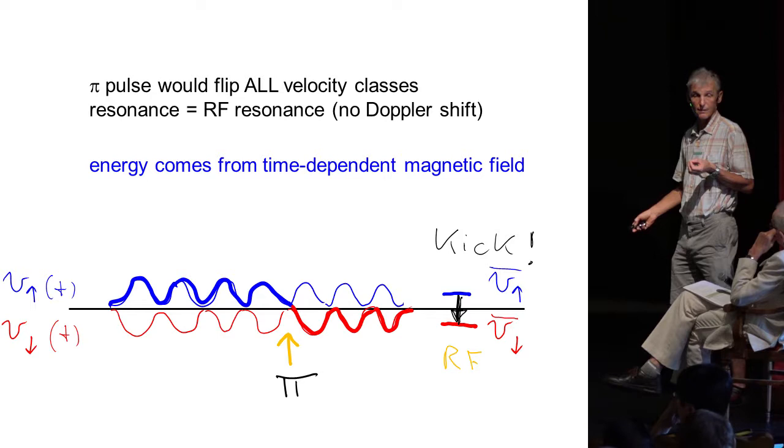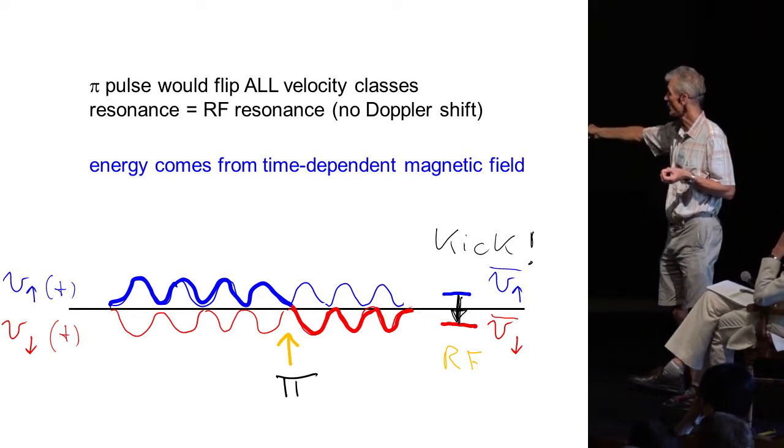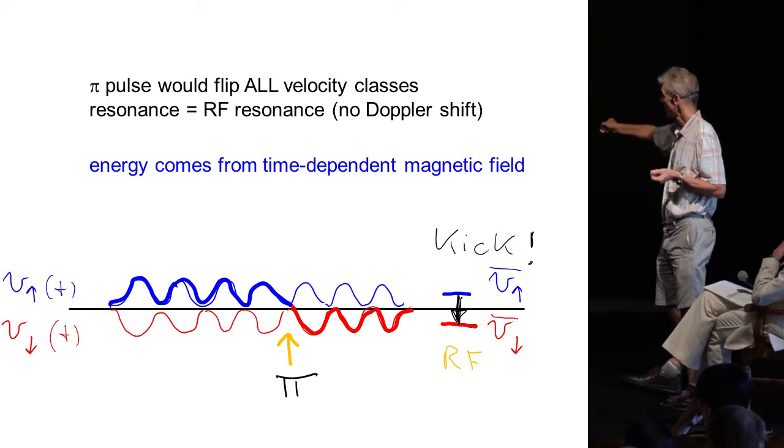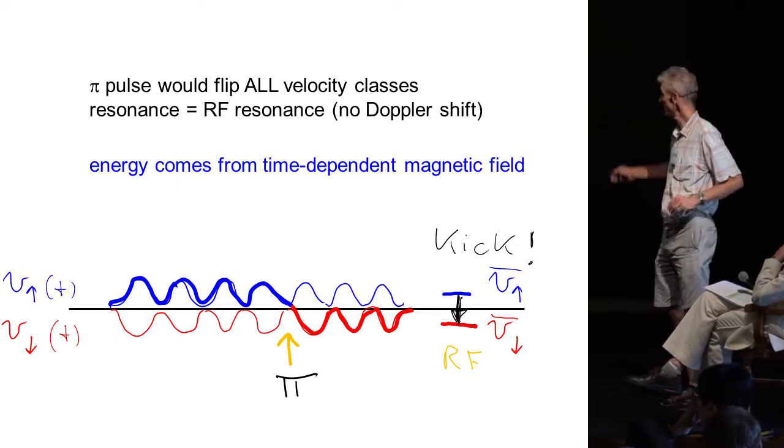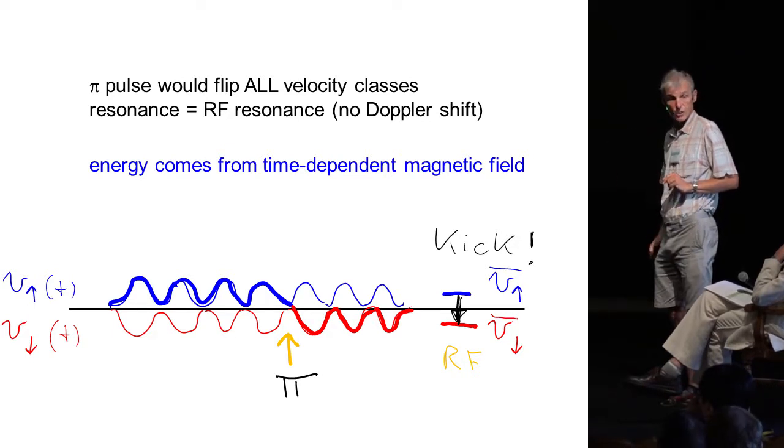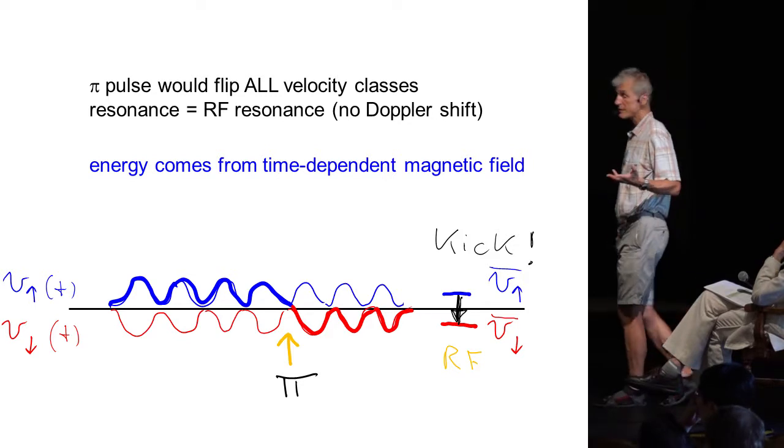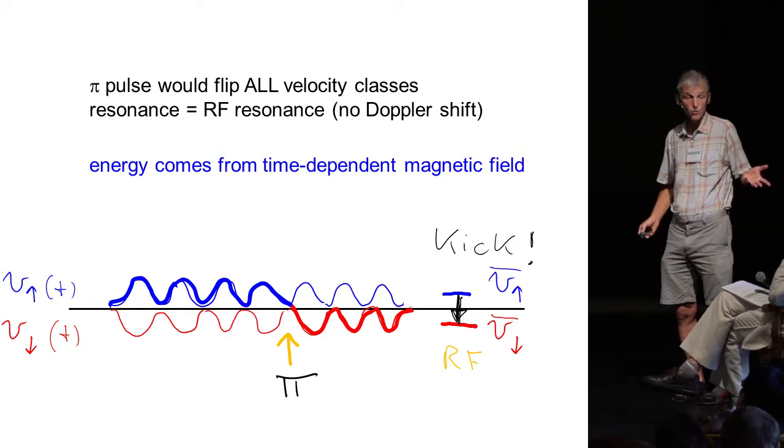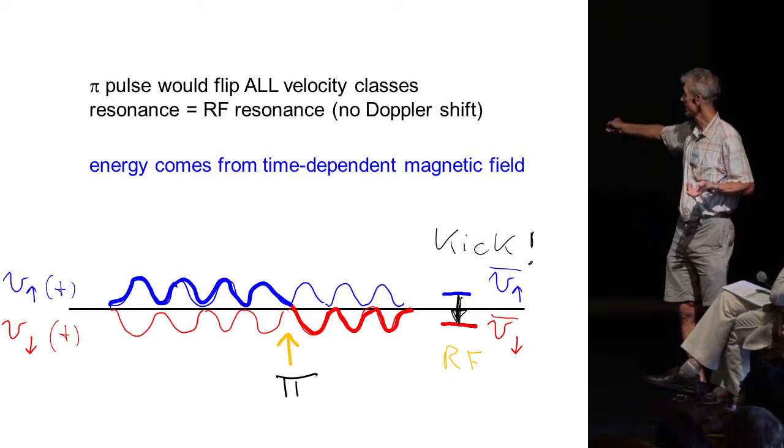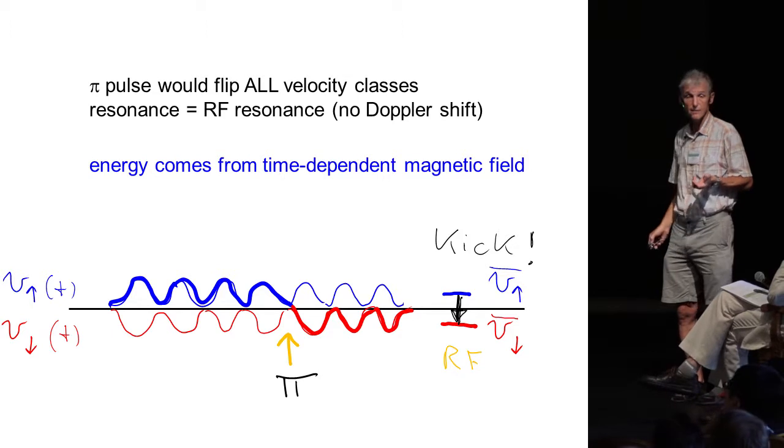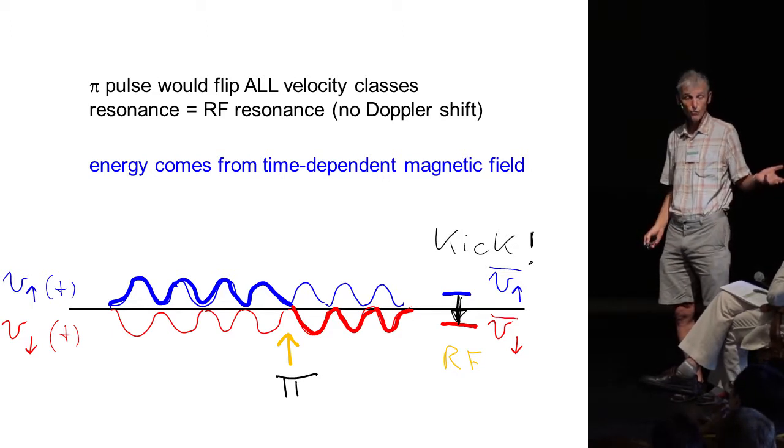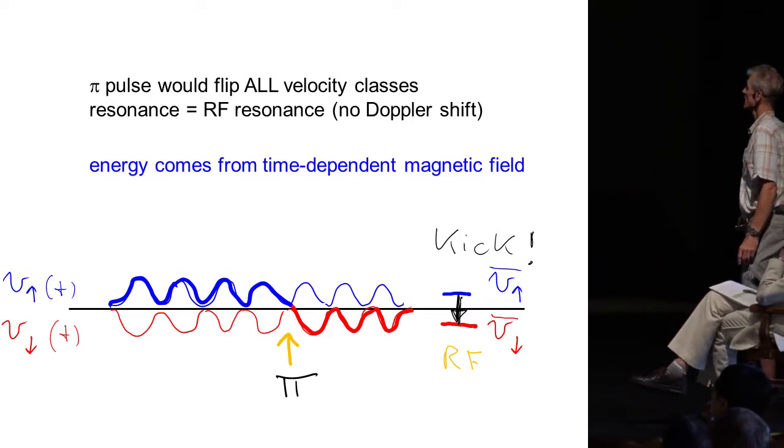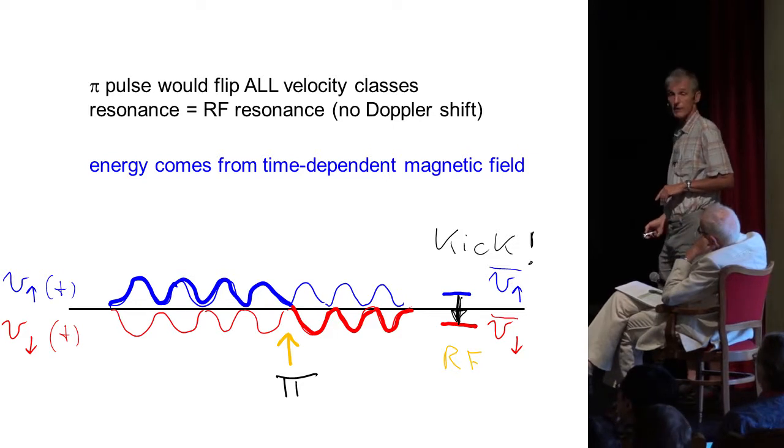However, is energy conserved? We have time dependent magnetic fields. For time dependent Hamiltonian you cannot generally assume that energy is conserved. And indeed let's assume we would have a pi pulse. So we would have atoms in spin up and with the pi pulse we would switch them to spin down. At that situation we would transfer momentum because the average velocity has changed. But in this case the resonant frequency for the pi pulse would be the atomic frequency. And therefore the extra kinetic energy which appears here will not come from the RF photon. It will come from the time dependent magnetic fields. So the energy in this case comes from the time dependent magnetic field.